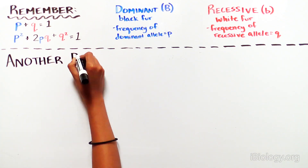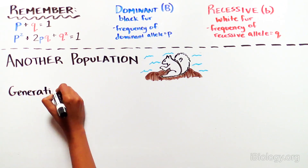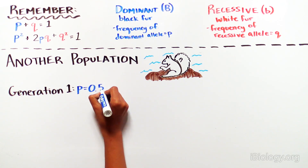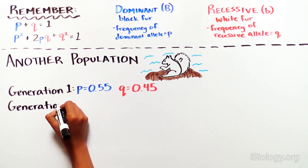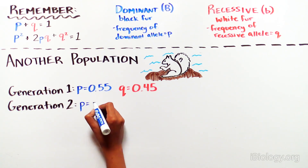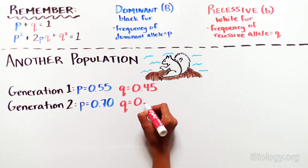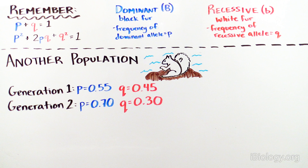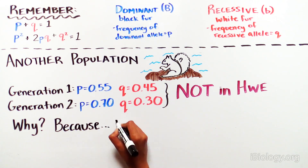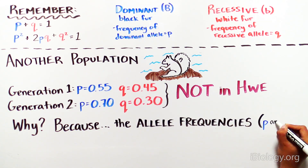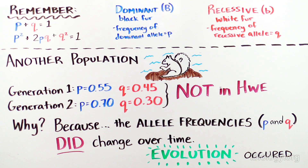Example number two: you are also studying a population of squirrels that live on a nearby beach. In the first generation, they had P equals 0.55 and Q equals 0.45. In the second generation, you find that the frequency of the dominant allele P is 0.7 and the frequency of the recessive allele Q is 0.3. This population is not in Hardy-Weinberg equilibrium, since the allele frequencies did change over generations. So we reject the null hypothesis and can say that this population evolved.